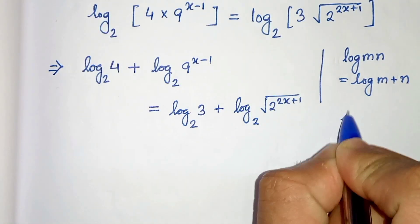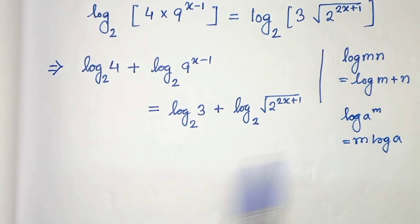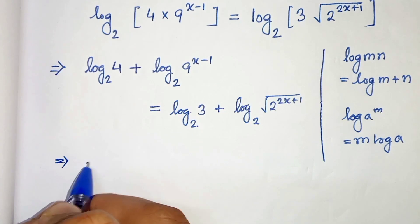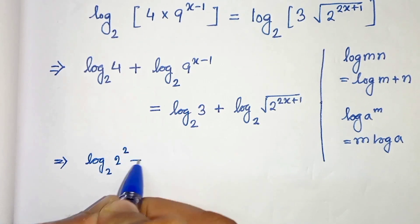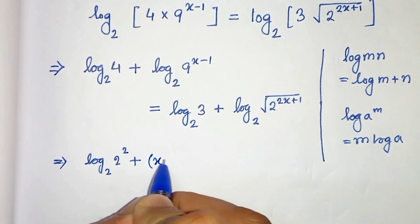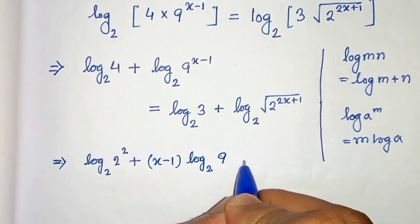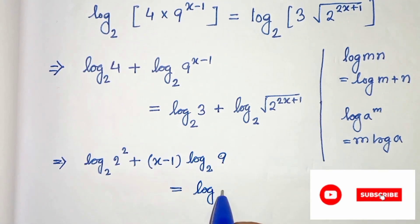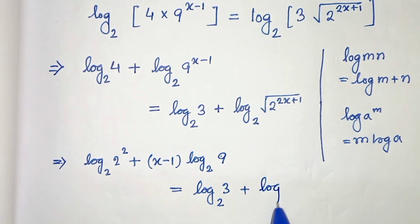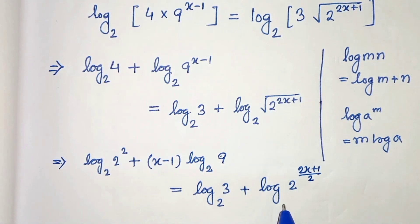Again, we know that log of a to the power m can be written as m times log of a — that means the power comes before the log. Applying this: log of 4 can be written as log of 2 squared, and x minus 1 comes before log of 9 to base 2. On the right side, the exponent 2x plus 1 over 2 comes before log of 2 with base 2.